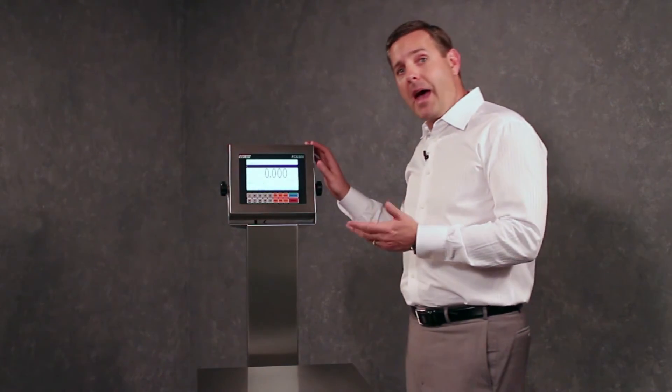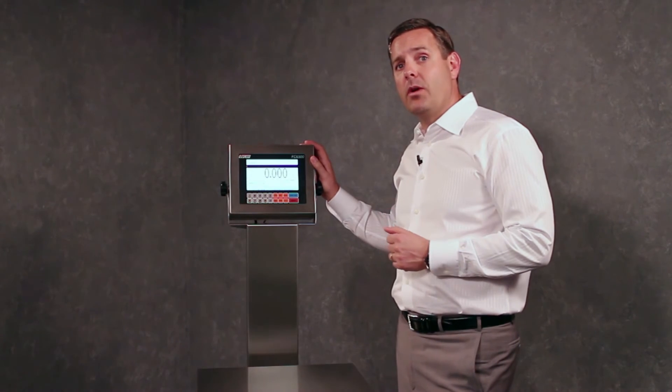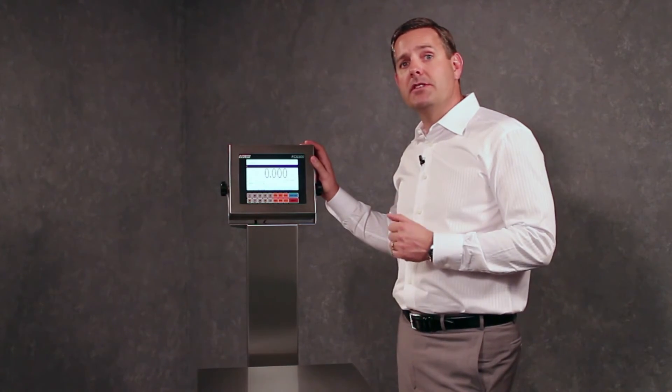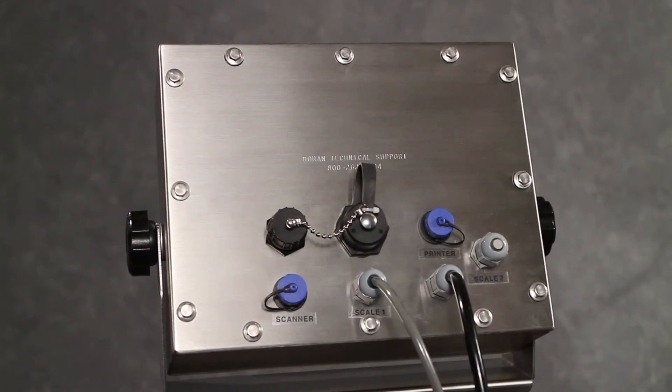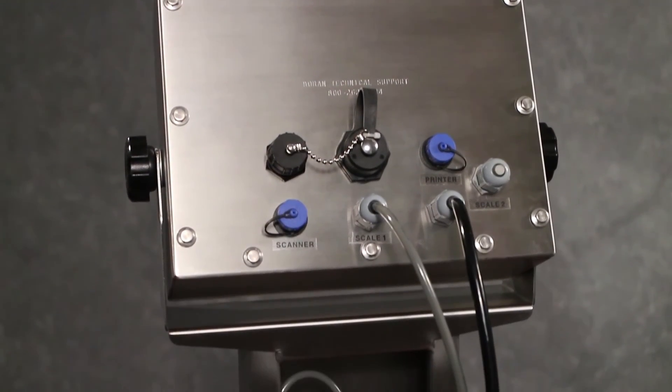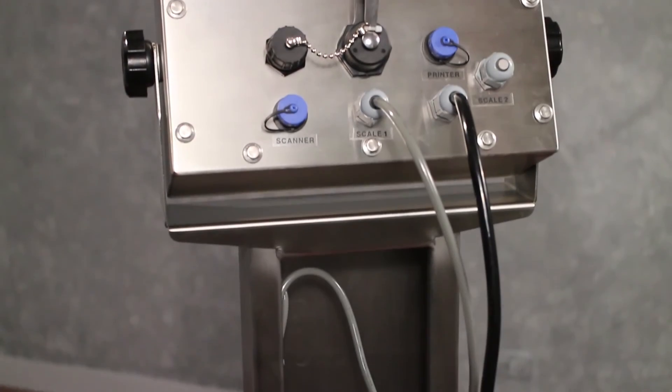Let's take a look at the back of the FC6300's digital weight display so you can see how data will be sent to and received from the scale as well as the other connectors on the back. While we have the scale turned around this is a good opportunity to see what I mean about the sanitary design.